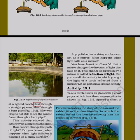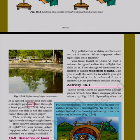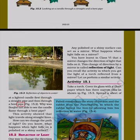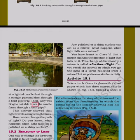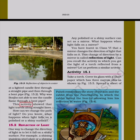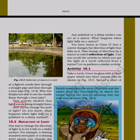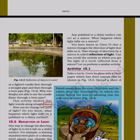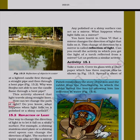He looked at a lighted candle first through a straight pipe and then through a bent pipe. Why was Bujho not able to see the candle flame through a bent pipe? This activity showed that light travels along straight lines.